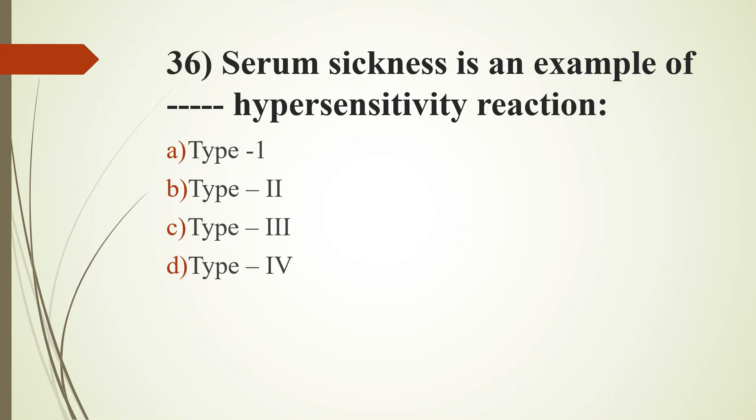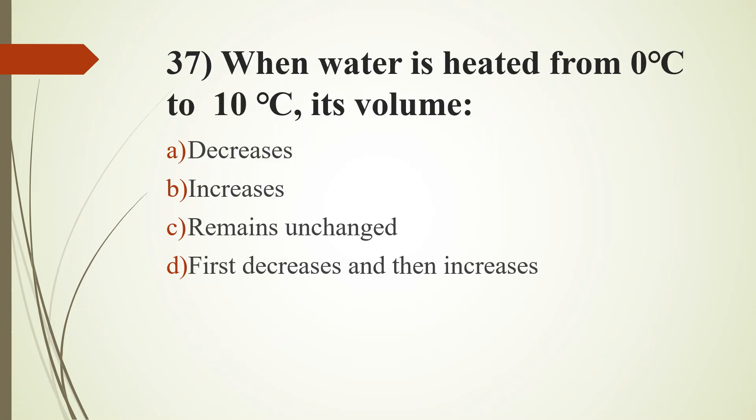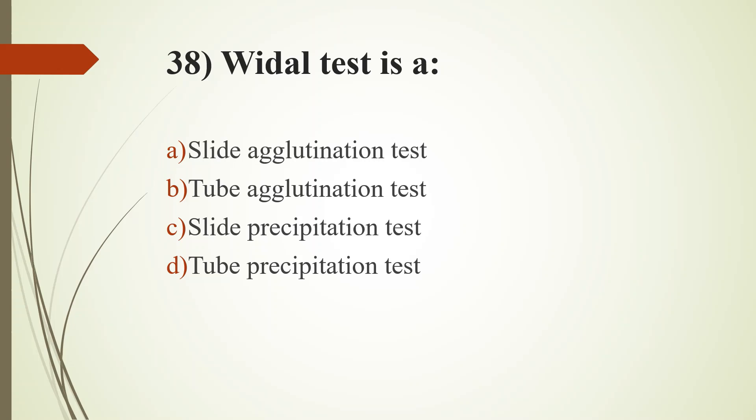36th question. Serum sickness is an example of dash hypersensitivity reaction: option A, type 1; option B, type 2; option C, type 3; option D, type 4. Answer is option C, type 3. 37th question. When water is heated from 0 degree Celsius to 10 degree Celsius, its volume: option A decreased; option B increases; option C remains unchanged; option D, first decreases and then increases. Answer is option D, first decreases and then increases. 38th question. Vidal test is: option A, slide agglutination test; option B, tube agglutination test; option C, slide precipitation test; option D, tube precipitation test. Answer is option B, tube agglutination test.